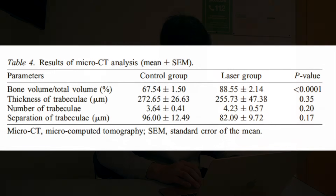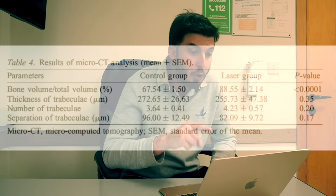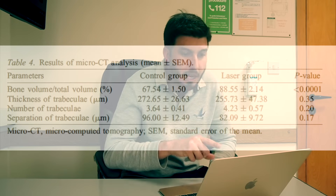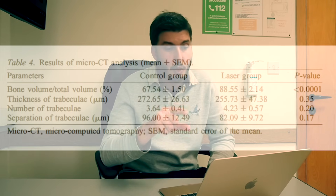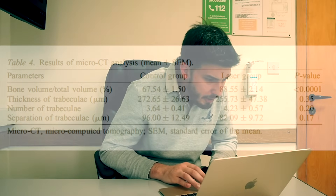Table 4 is the most important one, showing four variables with mean and standard deviation for both the control group and the laser group. The p-value tells us the difference between the two groups. For bone volume, the volume recovered with laser is greater than without laser, and the p-value below 0.05 confirms this difference is significant.